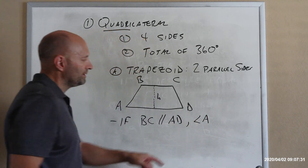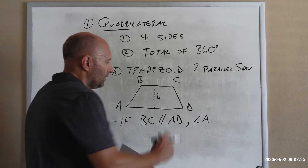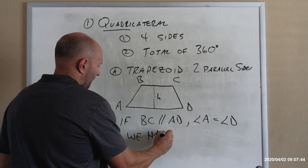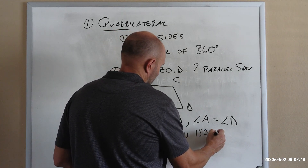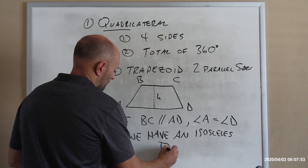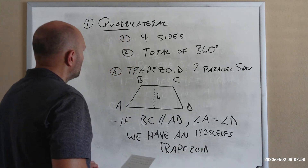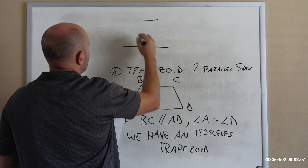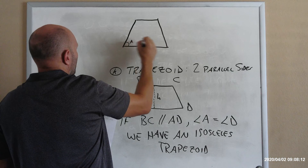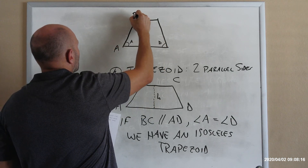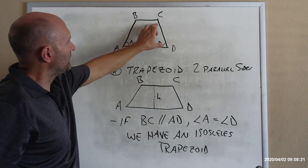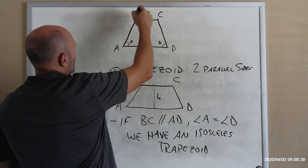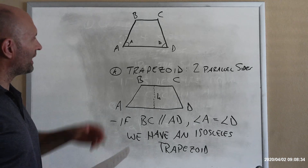...and if angle A is equal to angle D, then we have what's called an isosceles trapezoid. The top and bottom are parallel like before, but because angles A and D are the same, the non-parallel sides end up being the same length. It's essentially like an isosceles triangle where we just cut off the top — that gives us an isosceles trapezoid.